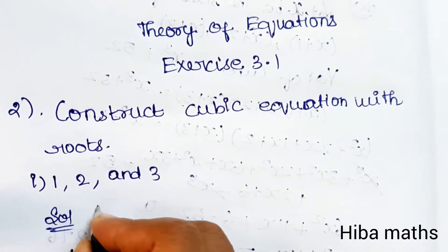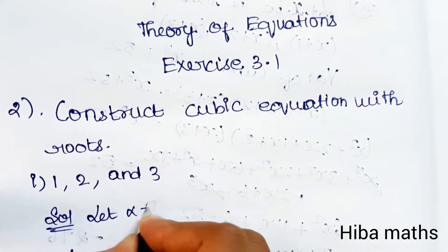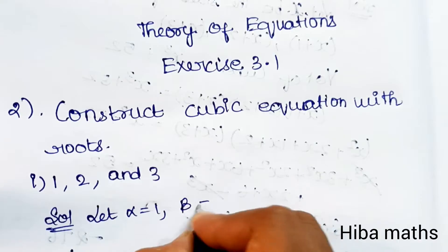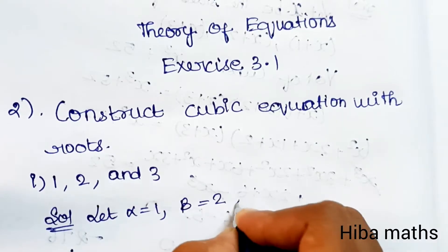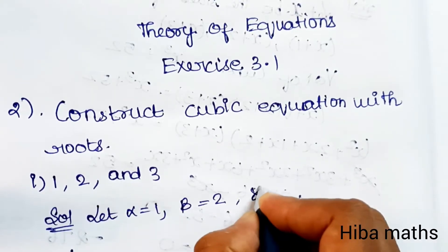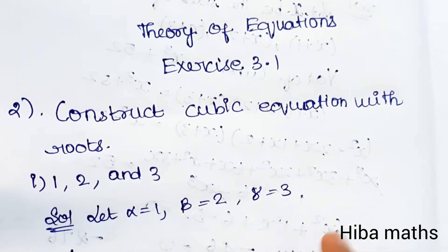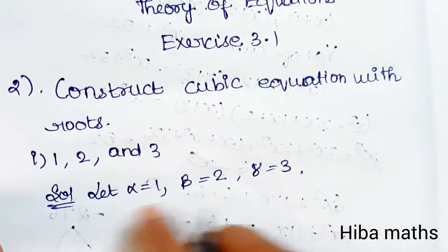For this solution, let alpha is equal to 1, beta is equal to 2, and gamma is equal to 3. These are our 3 roots.